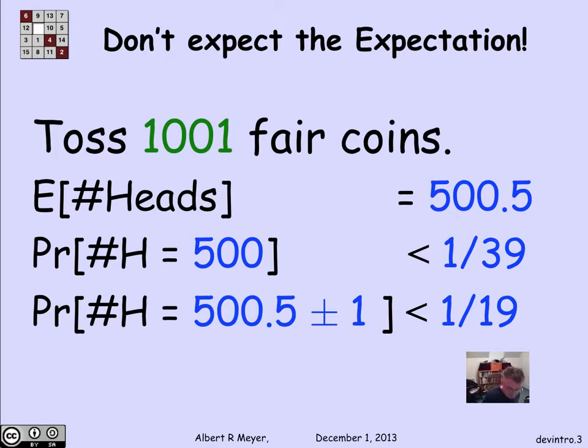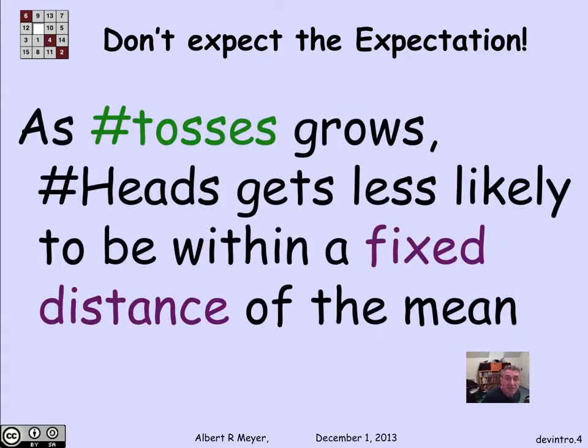Now, these numbers have gone down. From the previous numbers it was about 1/7th, and we've gone down to 1/19th. So we're less likely to be within a fixed distance, within 1 of the expectation when we flip more coins. So as the number of tosses grows, the number of heads gets less likely to be within any given fixed distance of the mean.